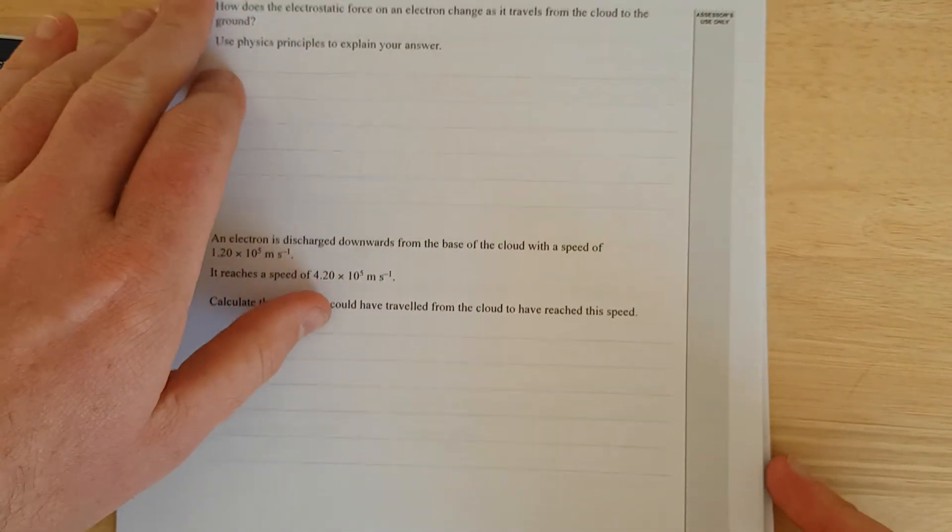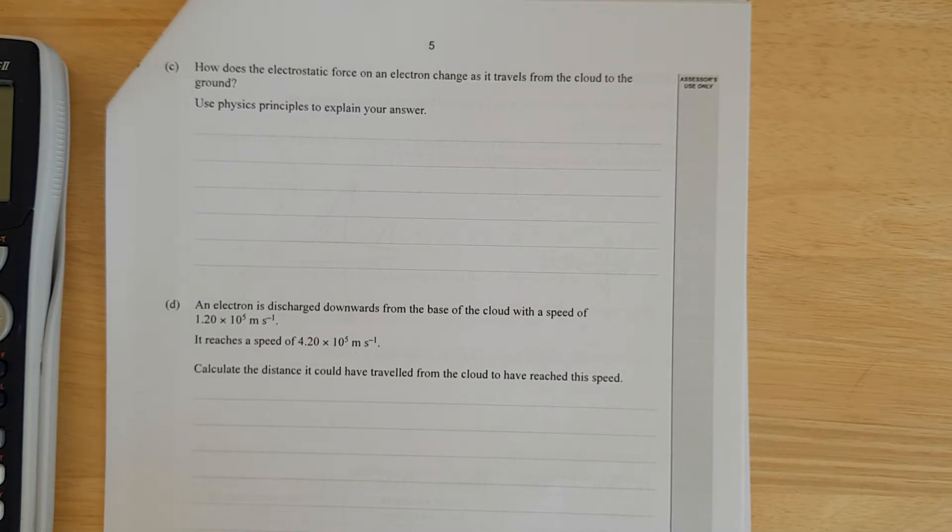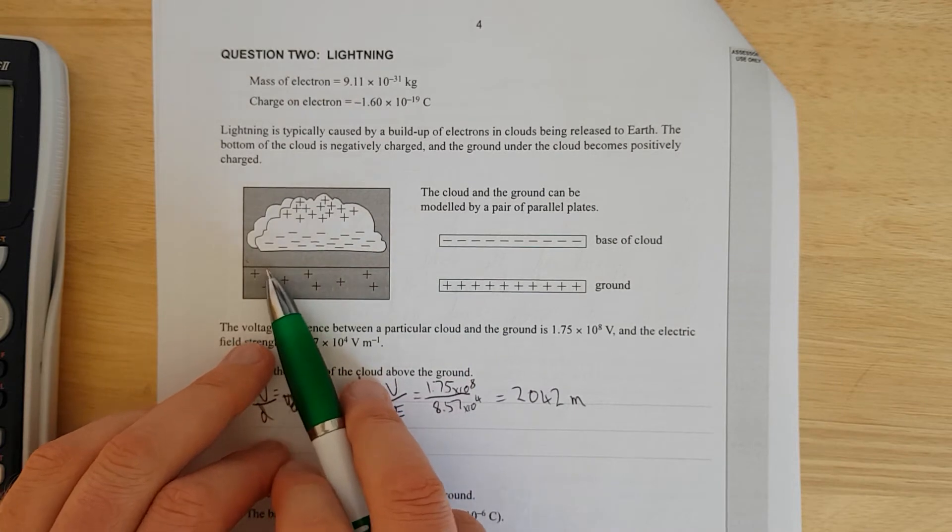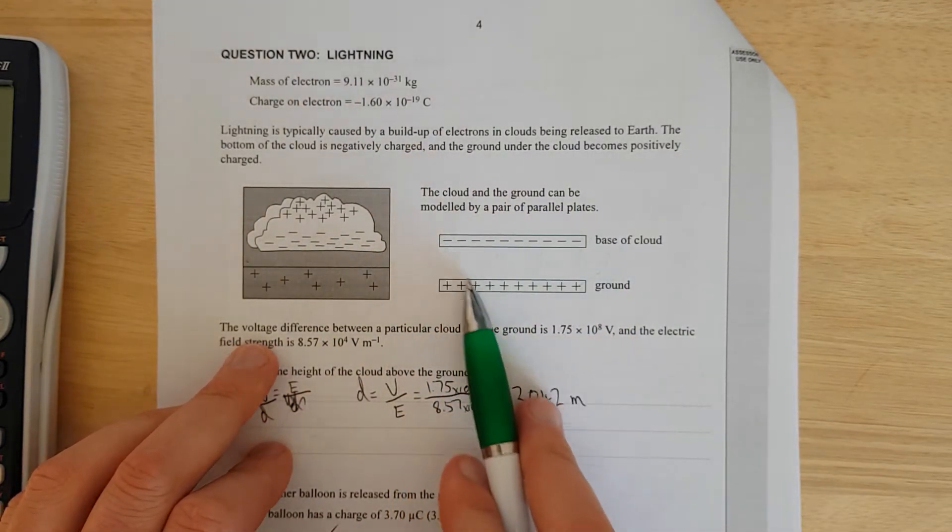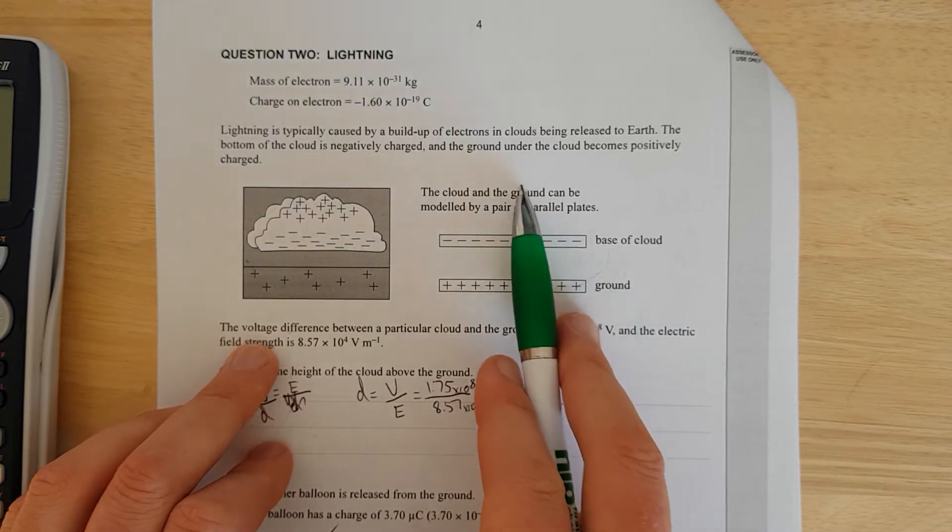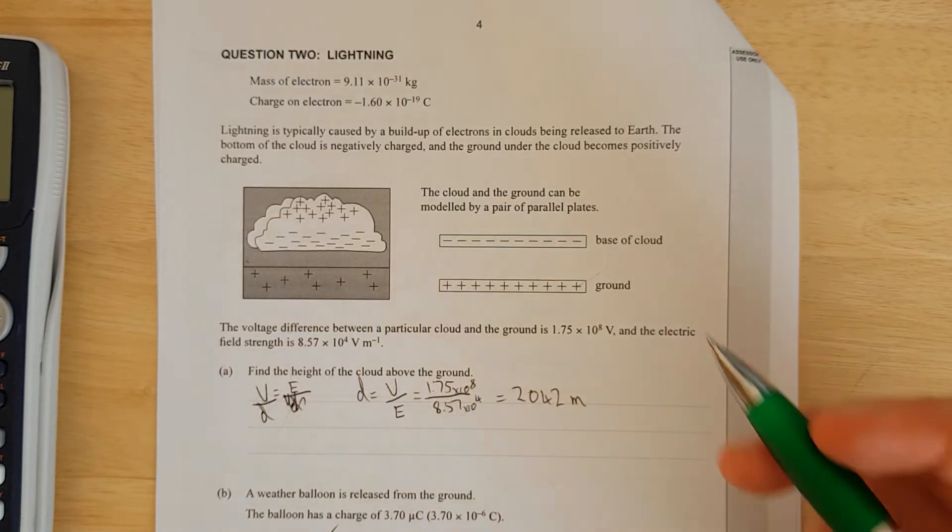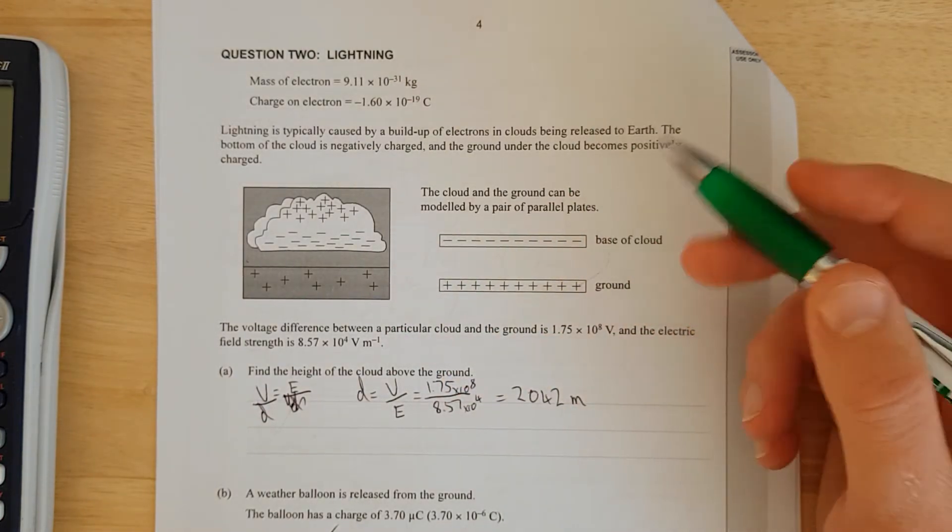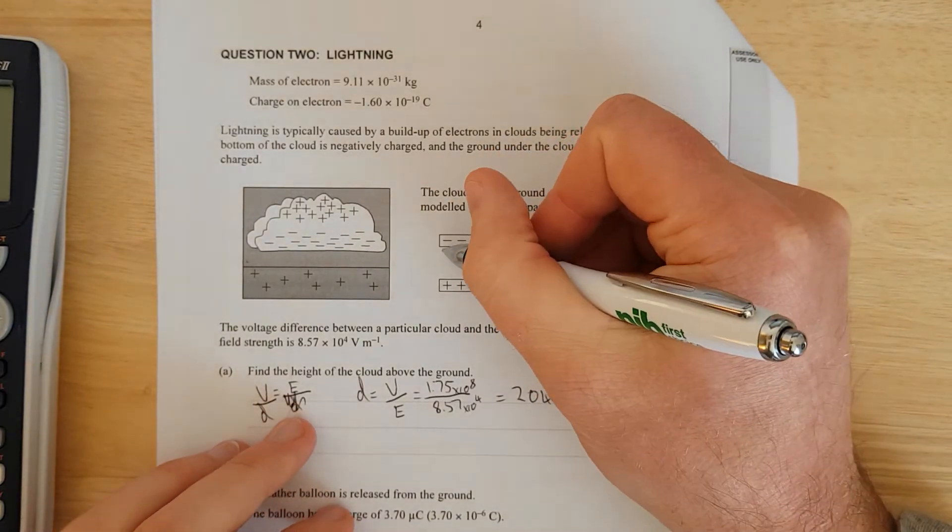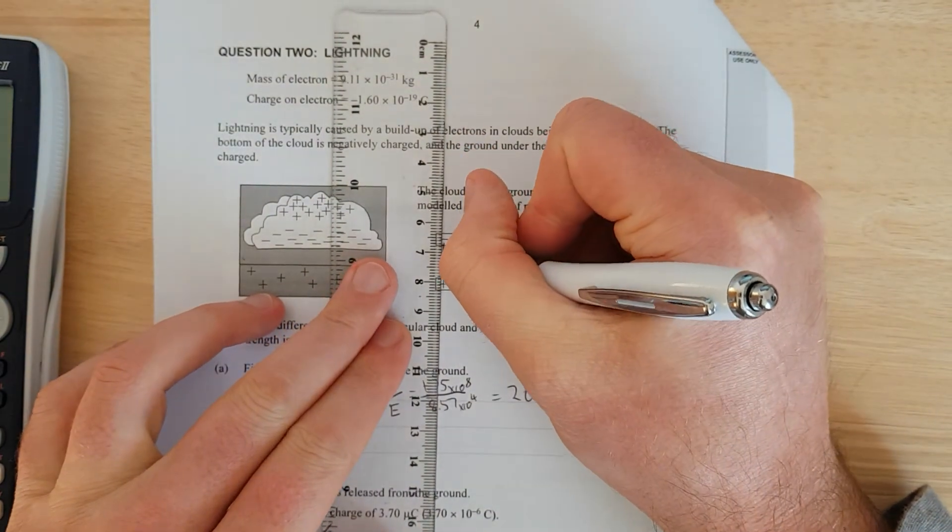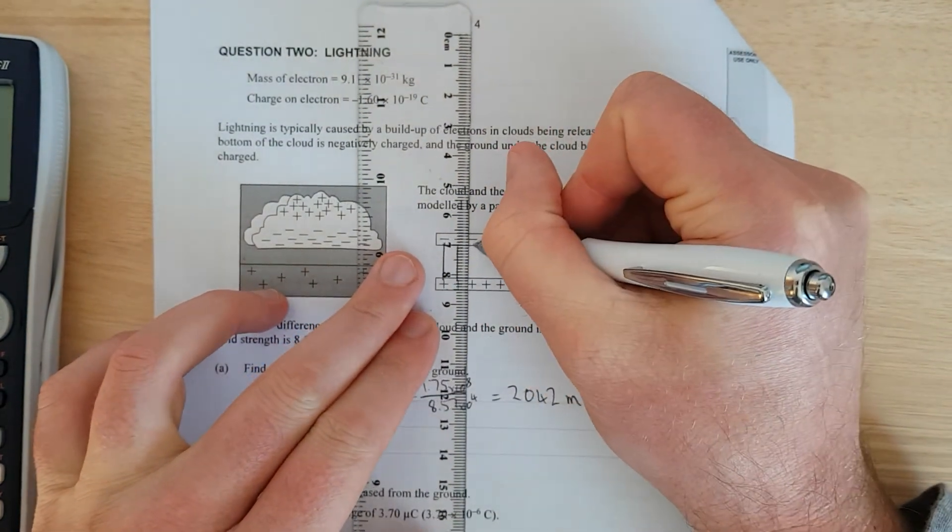Next question, how does the electrostatic force on the electron change as it travels from the cloud to the ground? Use physics principles to explain your answer. Looks like a flat bottom of the cloud, looks like a flat ground. The model that I've used is flat, flat, so if it was circle flat, then the field strength would increase as it gets closer to the cloud because the field lines would be closer together. But because the field lines are all going to be the same distance apart, the field lines are going to be all uniform except at the edge of the cloud.